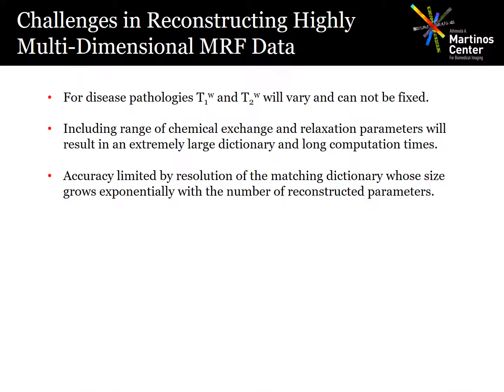So far in the reconstructions, we've been assuming a constant set of relaxation parameters, because otherwise the dictionary size, which grows exponentially with the number of parameters, would just be too large. The issue is that in pathologies, the relaxation parameters will also vary, so they definitely have to be included in the dictionary. This growth in the dictionary affects both dictionary generation and the reconstruction. So a new approach is really needed in order to avoid these issues.